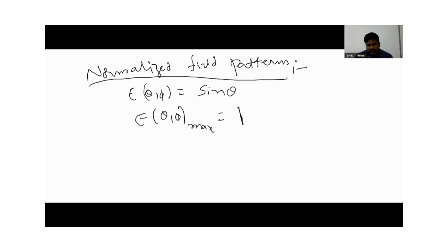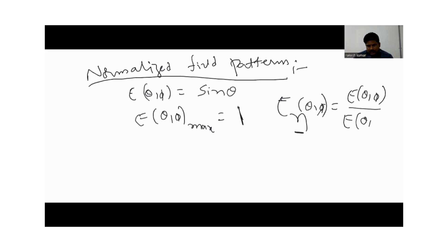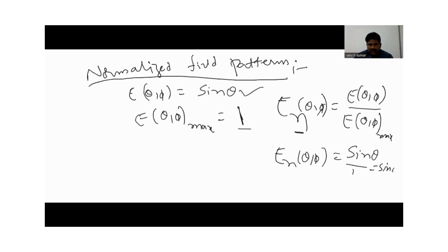The normalized field pattern is represented as N(θ,φ), and the expression is: N(θ,φ) = E(θ,φ) / E(θ,φ)_max. From this example, the value of N(θ,φ) is sine theta divided by 1, which equals sine theta. So the normalized field pattern value is sine theta.